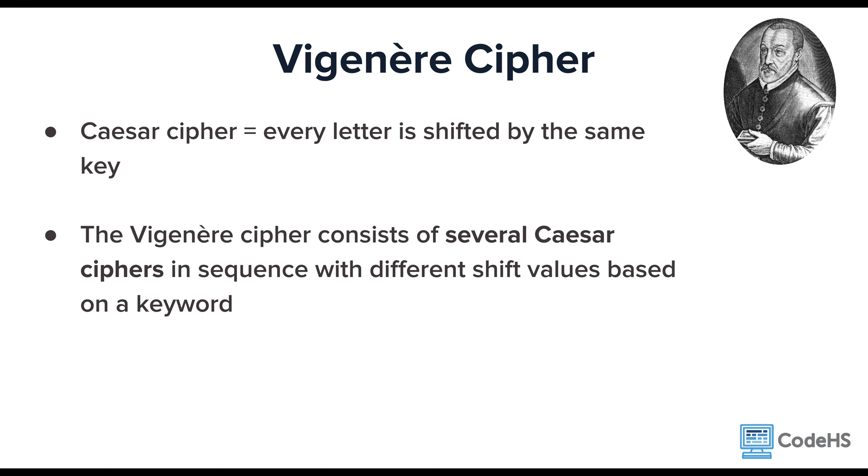This is where Vigenère, a 16th century cryptographer, took the Caesar cipher up a notch. He used the cipher, but he decided to use a different shift for each letter. The Vigenère cipher consists of several Caesar ciphers in sequence with different shift values based on a keyword. Let's take a look.